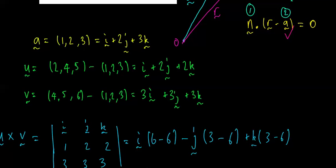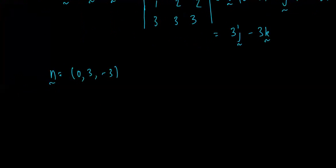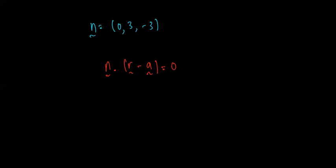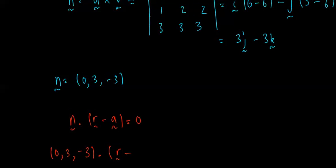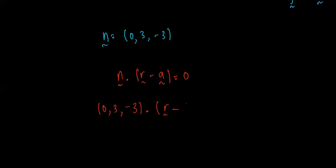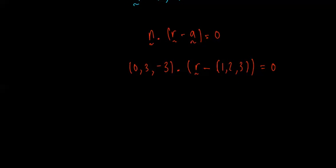So, let's go back to our vector equation here. n dot r, sorry, n dotted with r minus a. So, that's going to be, so, n dotted with r minus a equal to 0 will be (0, 3, -3) dotted with r minus, what's a? a was, here, (1,2,3), minus (1,2,3), and that has to equal 0. Or, we can rewrite that over here.